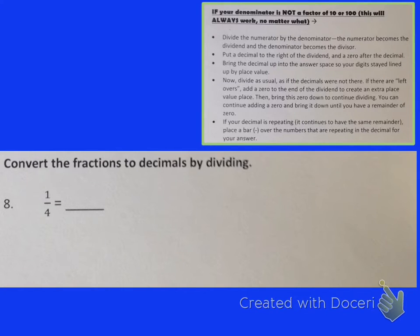So let's see what that actually looks like in practice. Let's convert this fraction to a decimal by dividing. So I have 1 fourth. Now we're going to divide the numerator by the denominator, so it's 1 divided by 4. We're going to put a decimal to the right of the dividend, and a zero after that. And then what we'll do next is we're going to bring the decimal up into the answer space, and then we're going to divide, ignoring the decimals. So does 4 go into 1? No, it does not. So does 4 go into 10? Yes, it does. How many times? It goes in 2 times. 4 times 2 is 8.